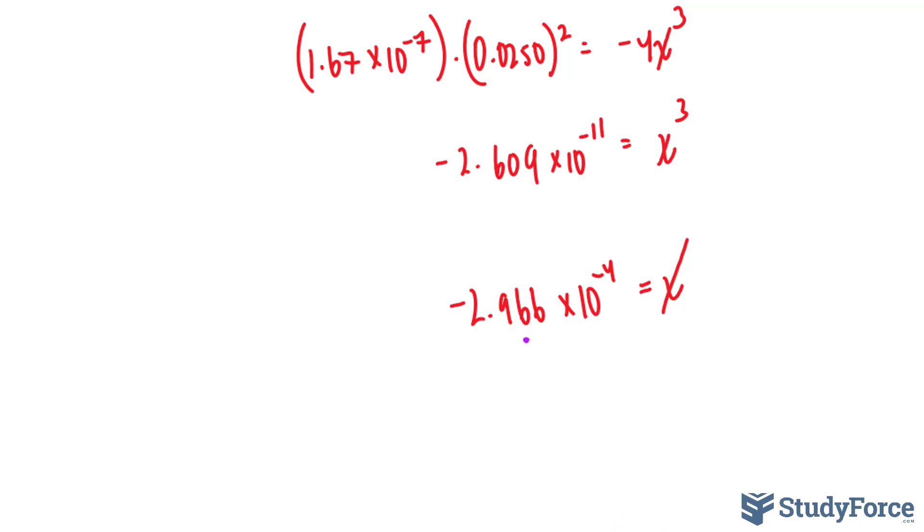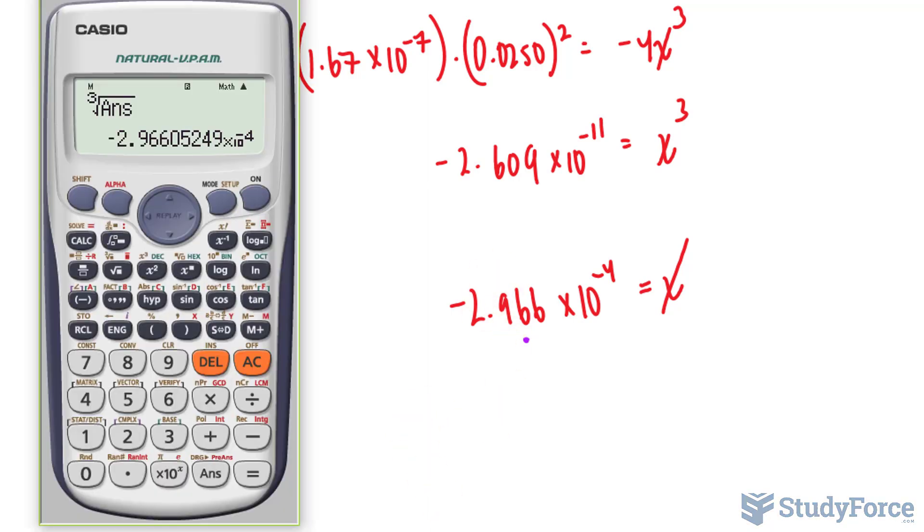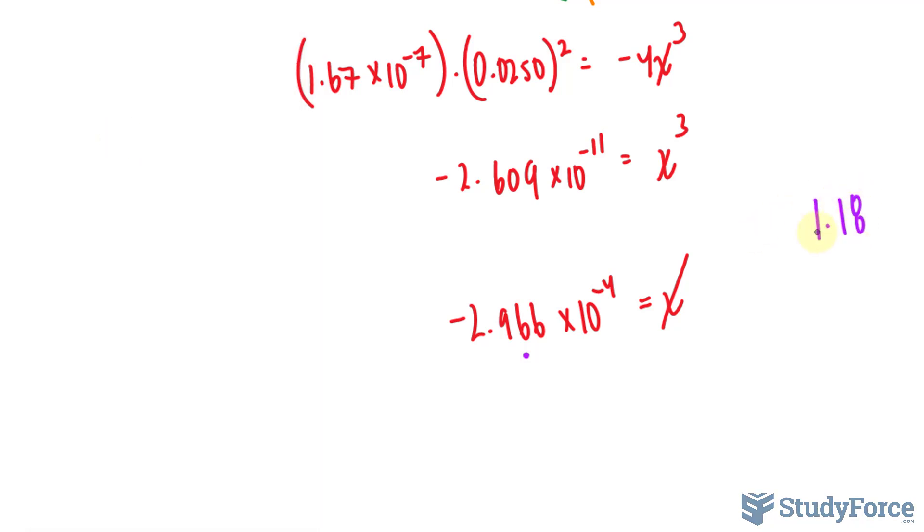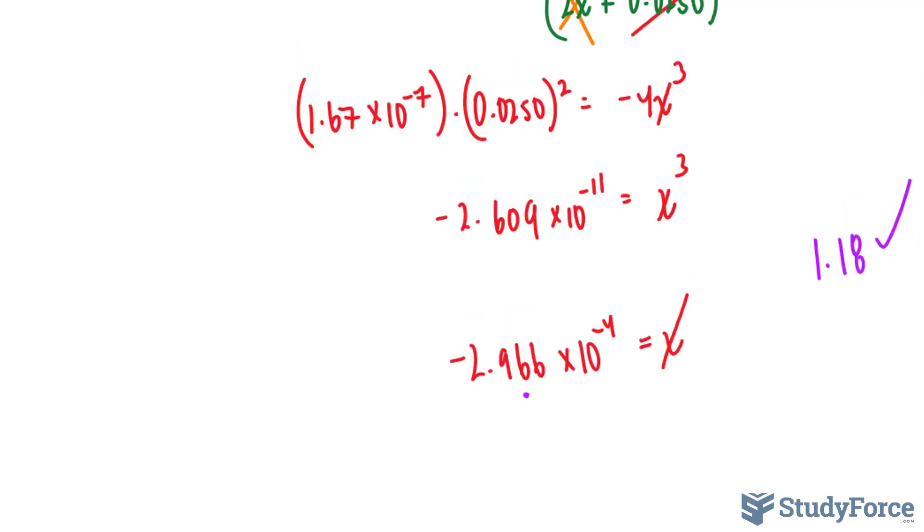Now, remember the approximation that we made that we cancelled out the 2X entirely? We want to check if that approximation is valid by comparing the calculated value of X to the number it was added to or subtracted from. The ratio of the two numbers should be less than 0.05, or 5%, for the approximation to be valid. If the approximation is not valid, we have to use another method to find out what that X is. And this involves using a calculator or a computer to calculate the exact root. If after we divide, it's less than 5, and it is, take a look, multiply that by 100%, we get 1.18. Ignore the negative part. So let's just take the absolute of this number. We have 1.18. This does not exceed 5%, so our approximation of removing that 2X is okay in this situation.